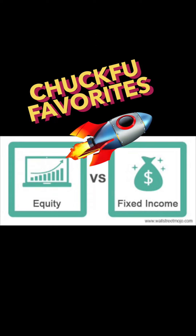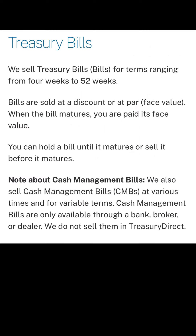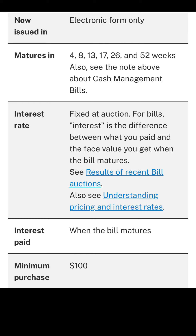Now let's talk about some of my favorites in both equities and fixed income. I like to buy treasury bills — these are good because they range from four weeks to 52 weeks, giving you a broad range. You can do a rotation of bills; you get them at auction and by the maturity date you'll get your fixed income return, or you can even sell before it matures. Doing the electronic form, I prefer the four-week and eight-week ones. The minimum purchase is $100 and the interest is paid when the bill matures.